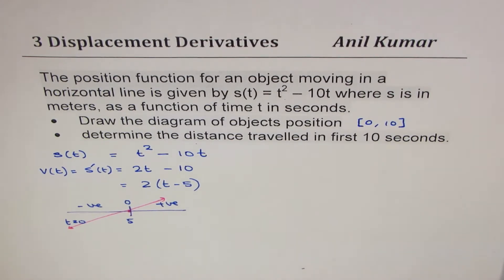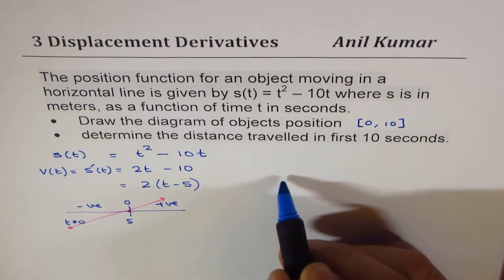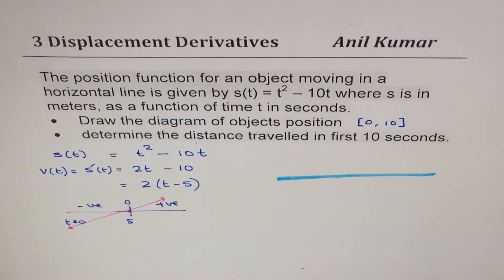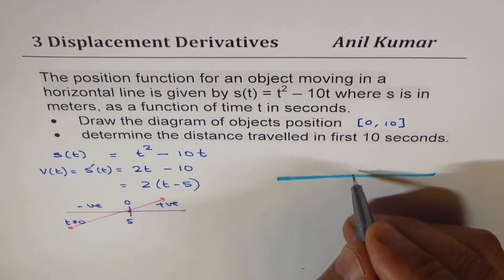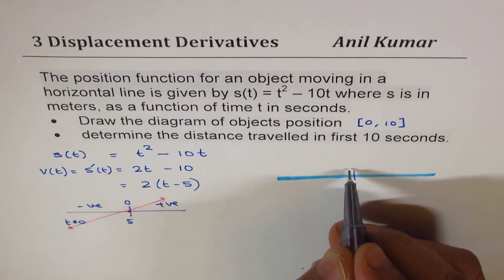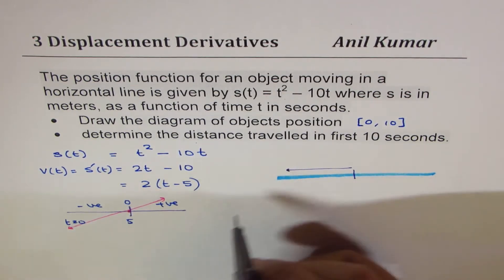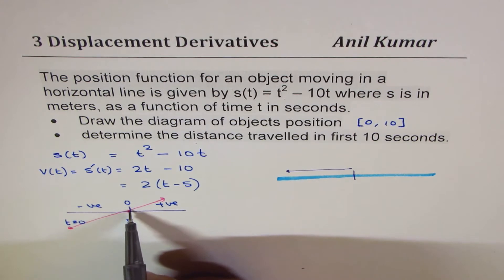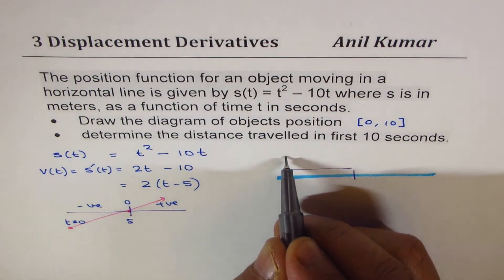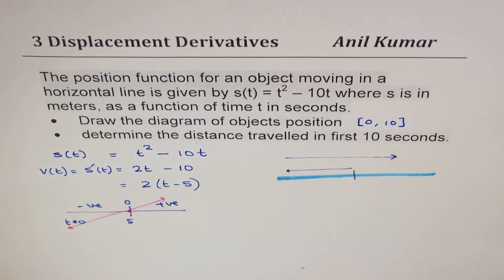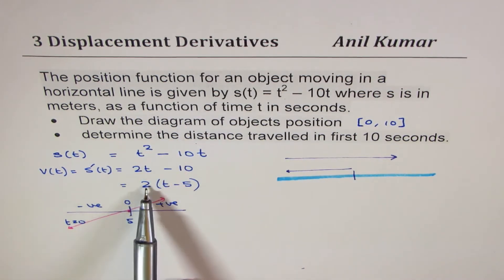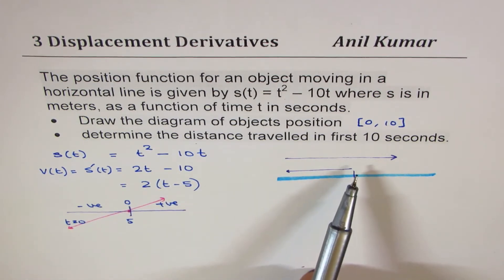Negative velocity really means that the object is traveling towards the left side. So if we sketch the displacement graph, what we realize is that for the first 5 seconds, object moves left, and then velocity becomes positive means it starts moving to the right side. So that becomes the movement along the horizontal line of the object, and that is why it is very important to find the velocity and understand what the real situation is.